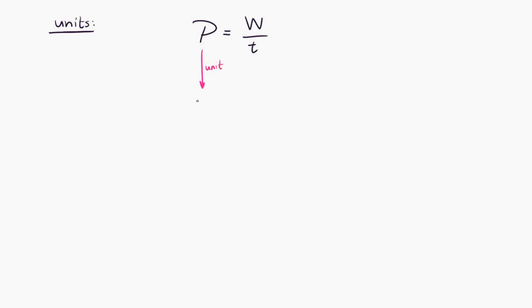Power has units of watts, and we know work has units of joules, and time has units of seconds. So that means that a watt is equal to a joule per second.